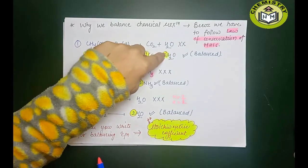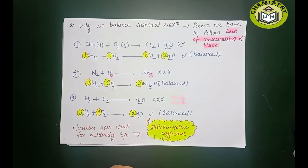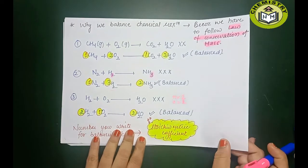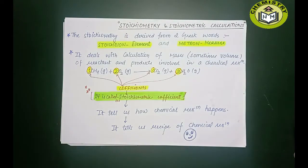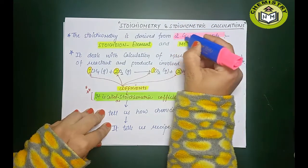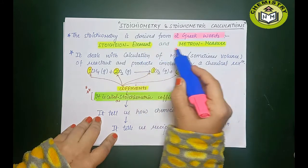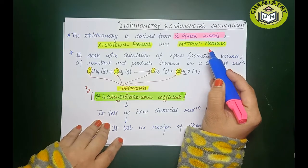The numbers we use to balance any chemical reaction are known as stoichiometric coefficients. The term 'stoichiometry' is derived from two Greek words: 'stoicheion,' meaning element, and 'metron,' meaning measure. So stoichiometry tells us the measure of elements — that is what it means.